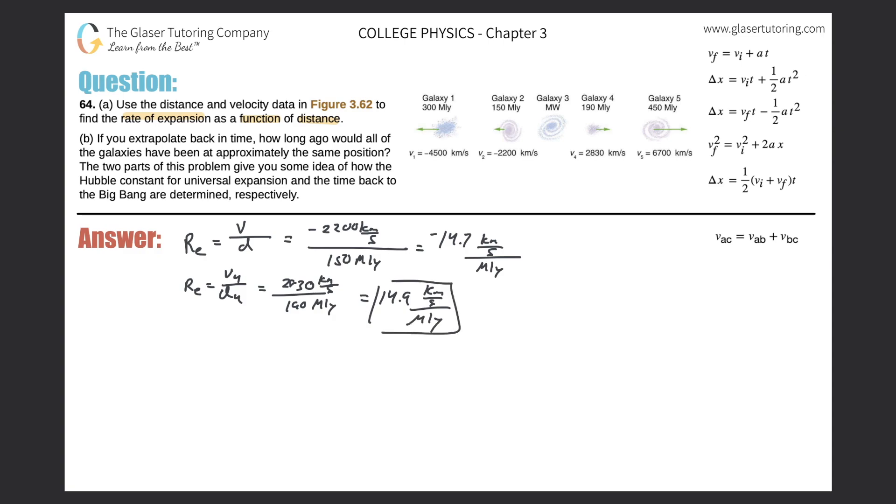I'm going to do the same thing for galaxy one and galaxy five. So this was number two, this was number four. For galaxy number one, it's just going to be negative 4,500 over 300, which works out to be negative 15 kilometers per second per million light years. Then number five: 6700 divided by 450, which works out to be 14.9.